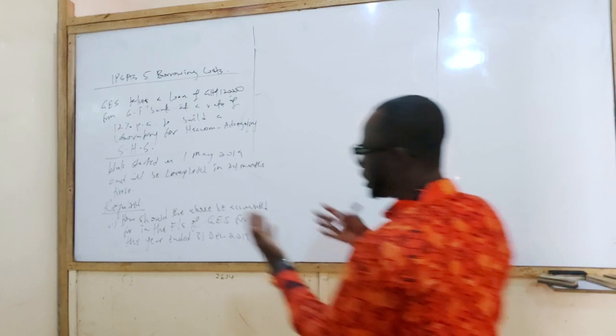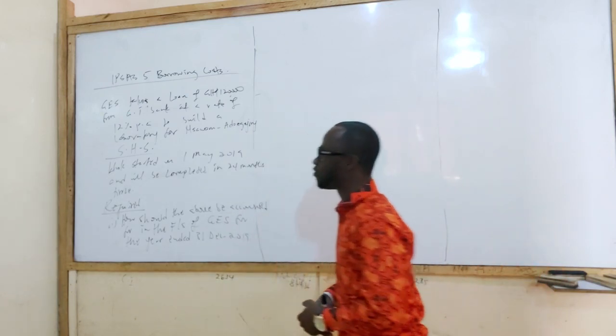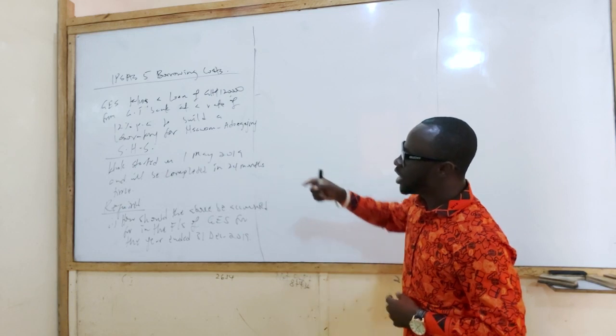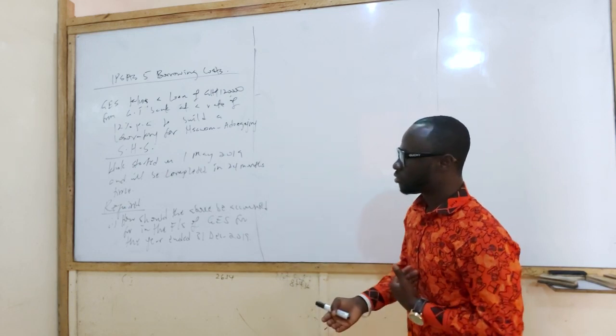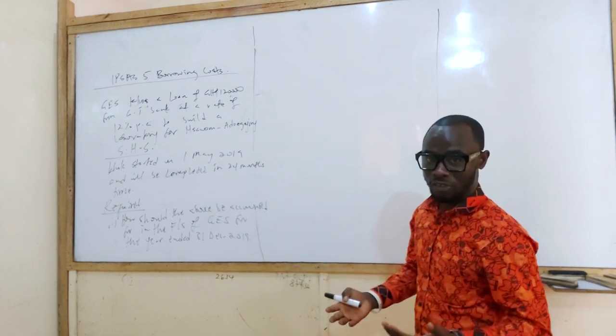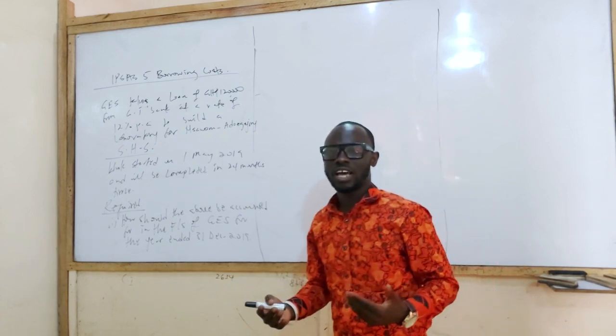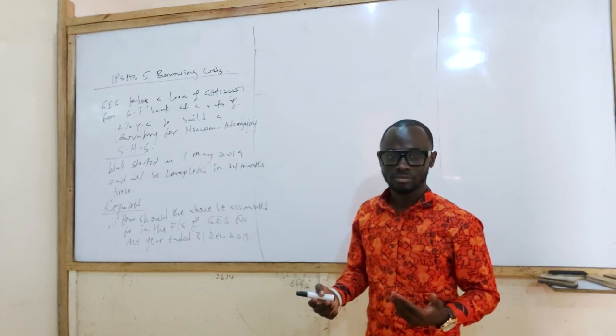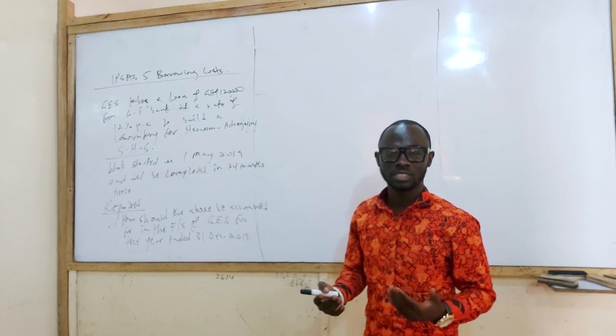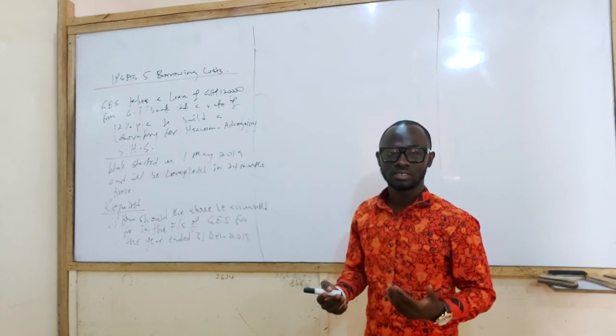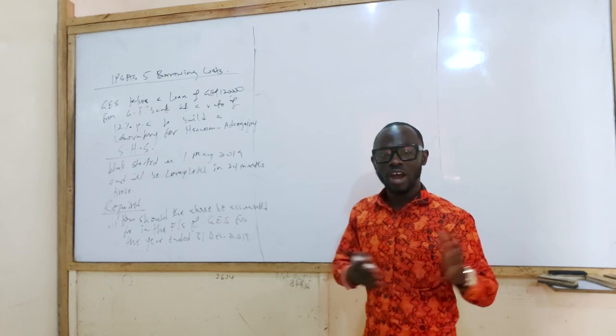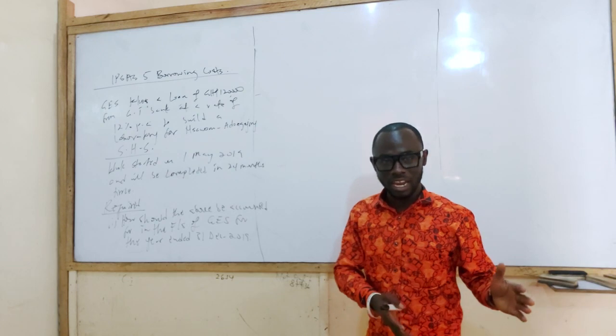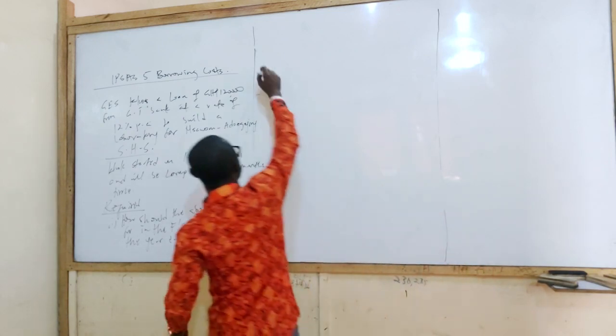So what do we do? This is under EPSAS 55, right? So what do we do? Is the laboratory a qualifying asset or not? It is a qualifying asset. So if it is a qualifying asset, how do we treat the interest expense? We capitalize it. So let's get the interest expense.